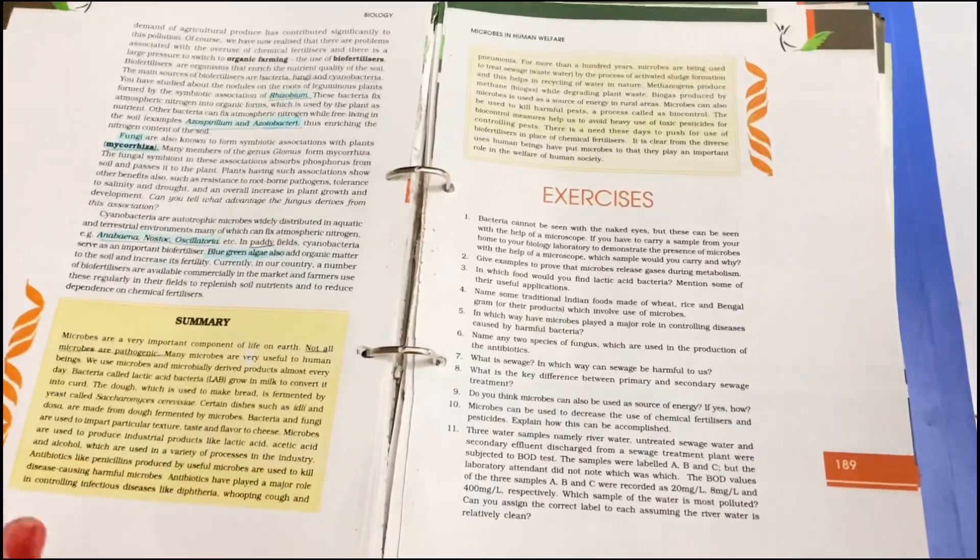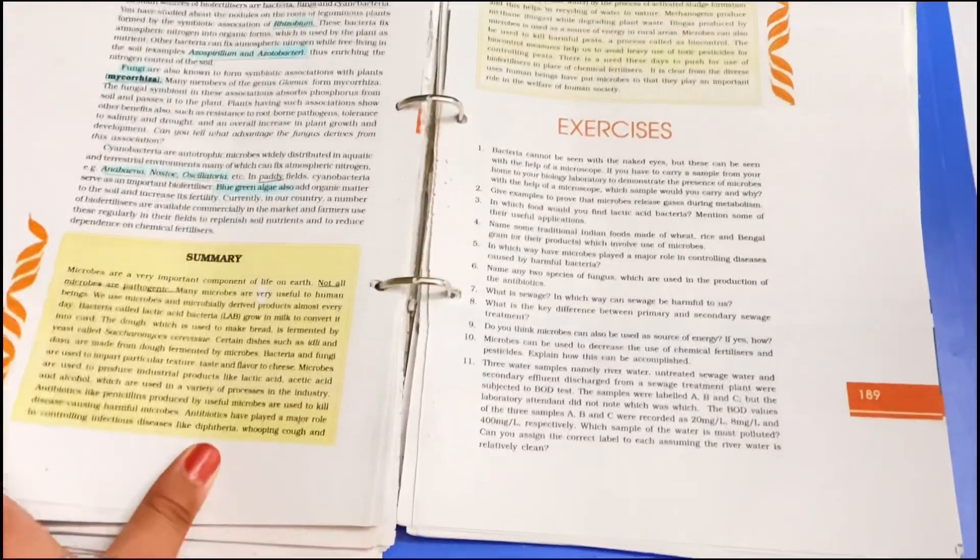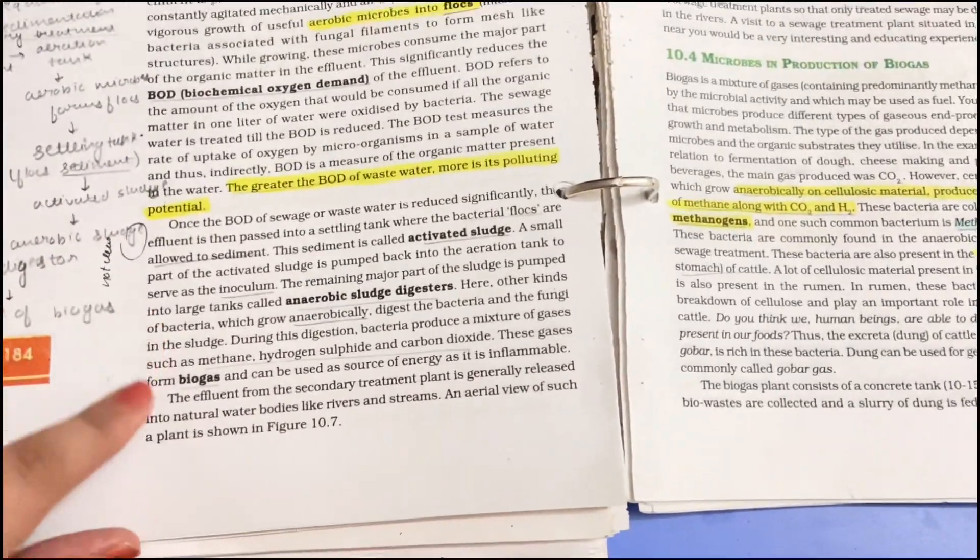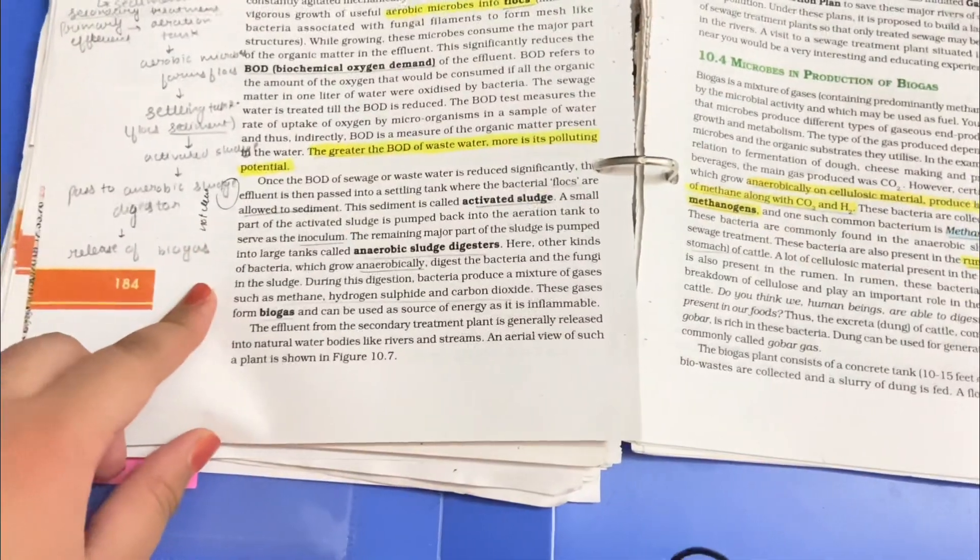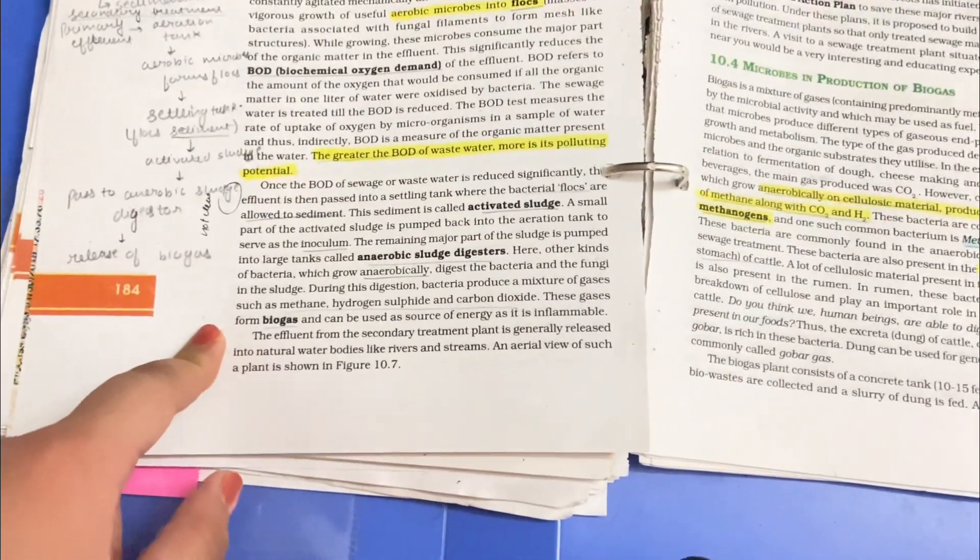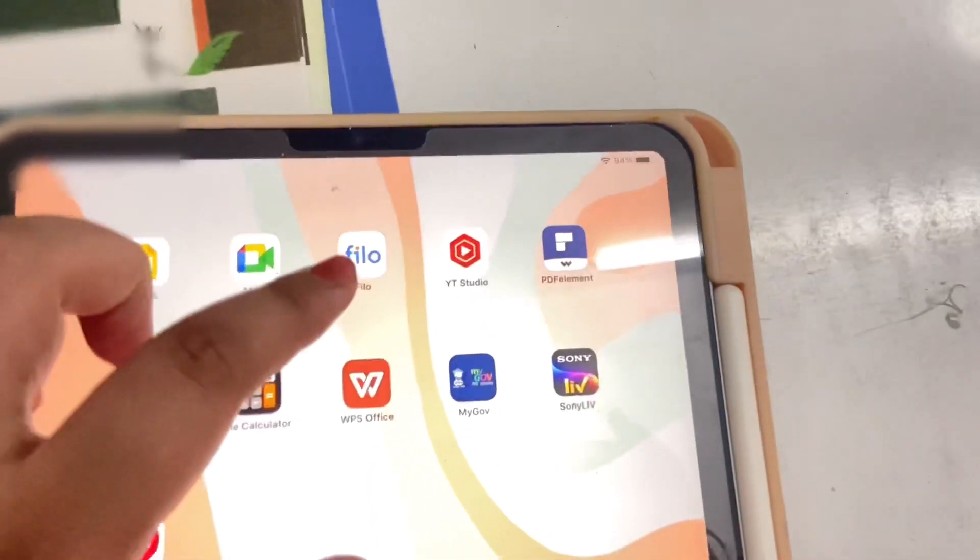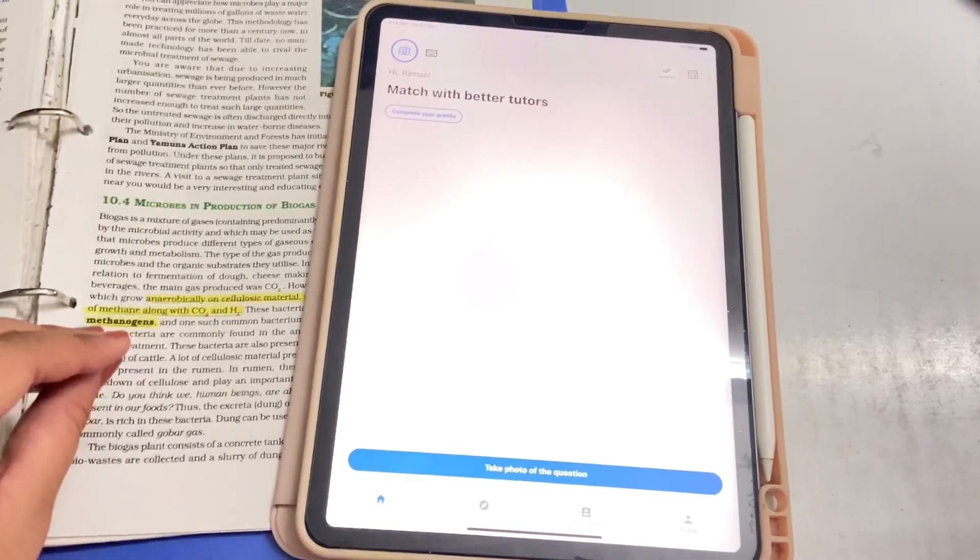So I'm finally done with the microbes chapter, but the thing is that a few of my concepts are not clear. For example, this paragraph is not that clear and I think I should clear it right now because if I don't they will keep piling up which will lead to a backlog. I will be using the app Below to clear my concepts. This app is very simple to use.